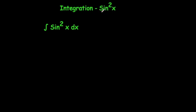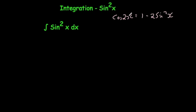What we're going to do is use cos 2x equals 1 minus 2 sine squared x. If we rearrange this and make sine squared the subject, we can replace it with something involving cos 2x, which is much easier to integrate.